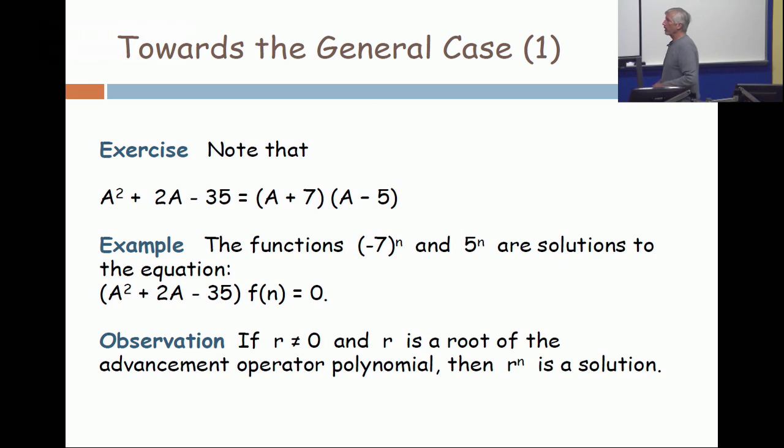And now, I claim that the functions minus 7 to the N and 5 to the N are solutions to the polynomial advancement operator equation A squared plus 2A minus 35 on F of N equals 0. So, I want you to verify that.